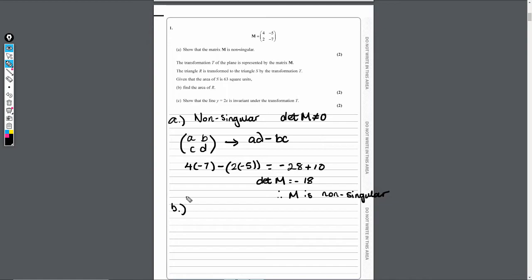In this case here now, what this is saying is that the area of S is equal to the absolute of the determinant of M times the area of R. Well, the area of S we know, that's 63 square units, we just want the area of R. So if we rearrange this, we can get the area of R. Therefore, in this case now, area of R will simply be the area of S divided by the absolute of the determinant.